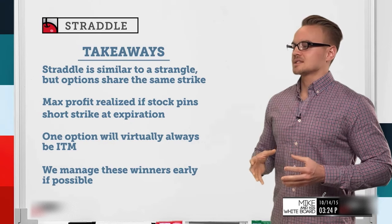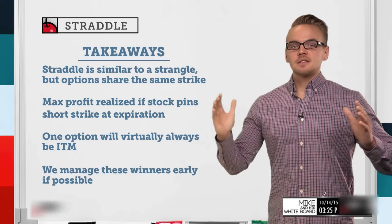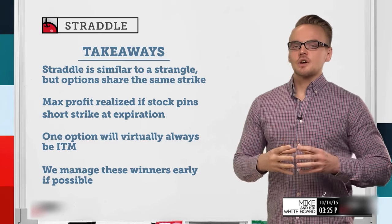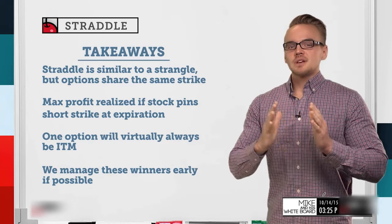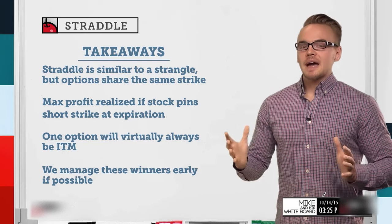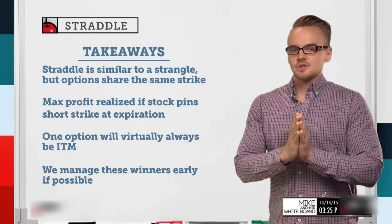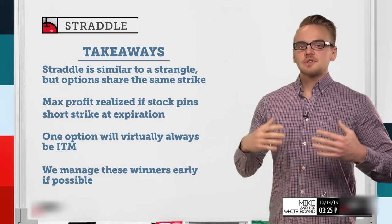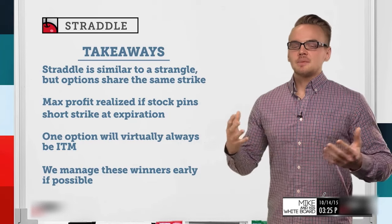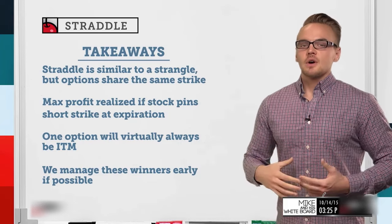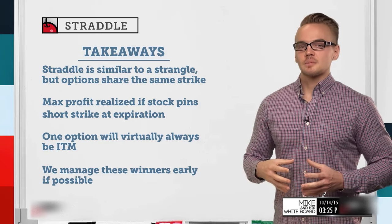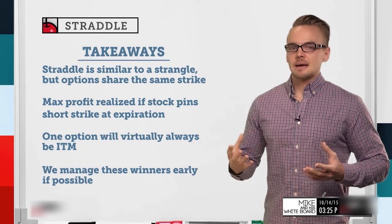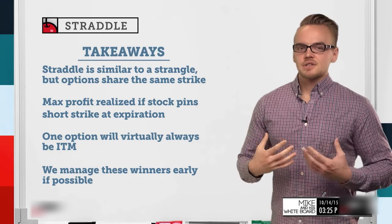The second takeaway is that max profit is realized when the stock pins the short strike at expiration. Unlike the strangle, where two out-of-the-money options give you a wide range for the stock price to move, we're collecting a much larger credit by selling two at-the-money options. But our max profit is only realized if the stock price pins our short strike at expiration. Last but not least, we like to manage these early — if implied volatility comes down or the premium decays, we look to buy back at a lower price sooner to mitigate risk and lock in gains.